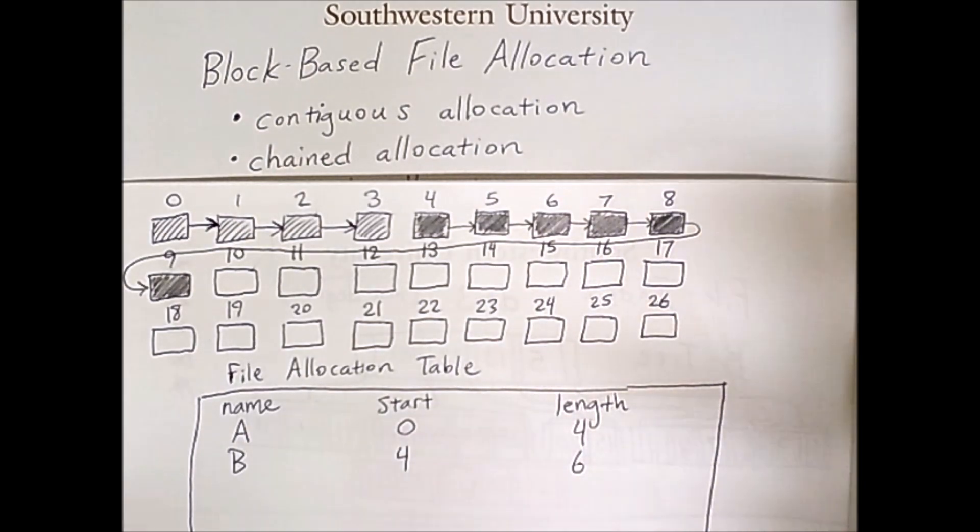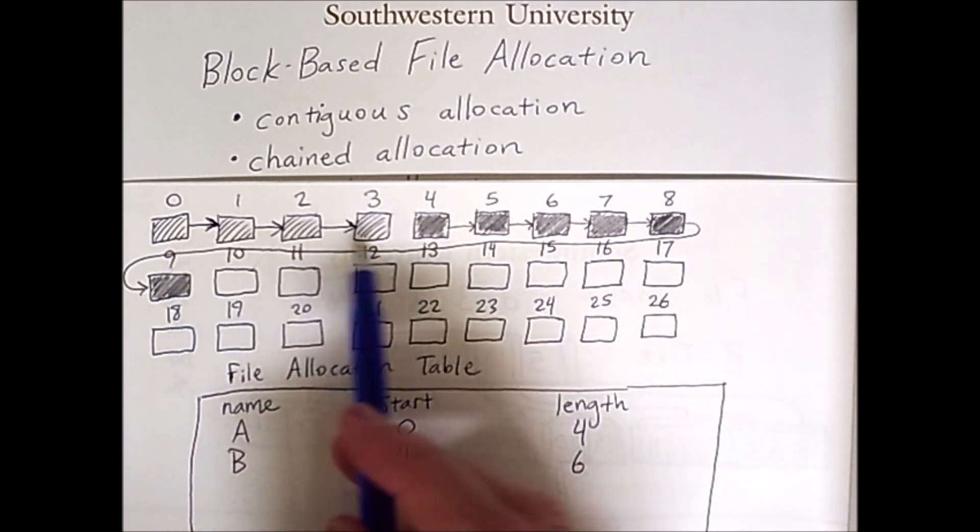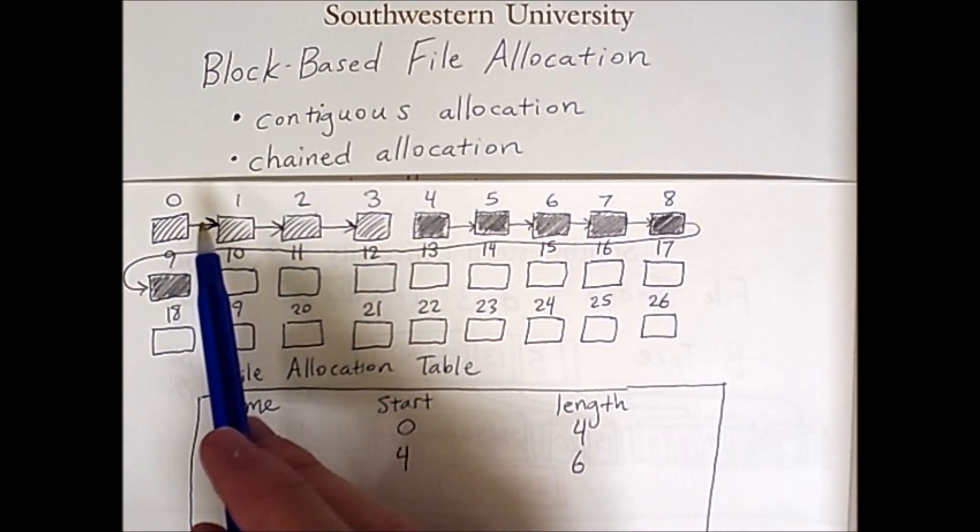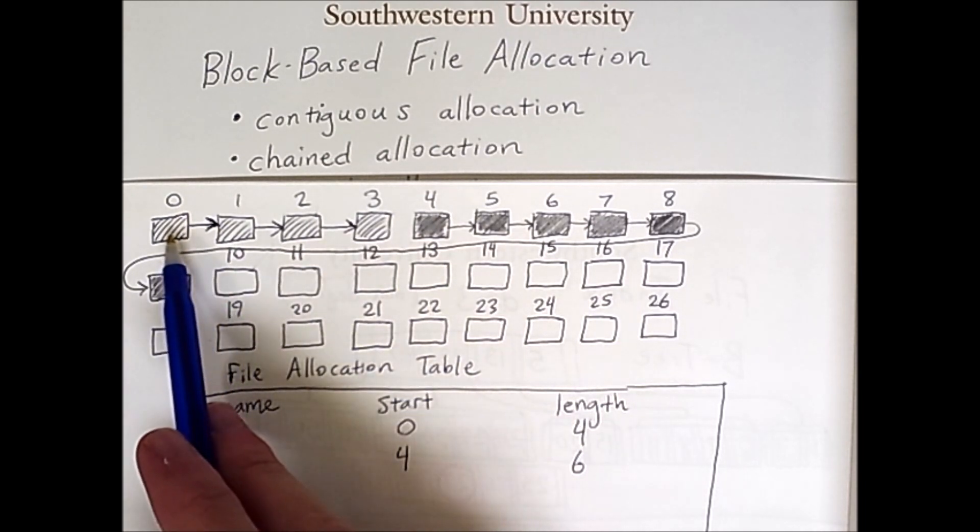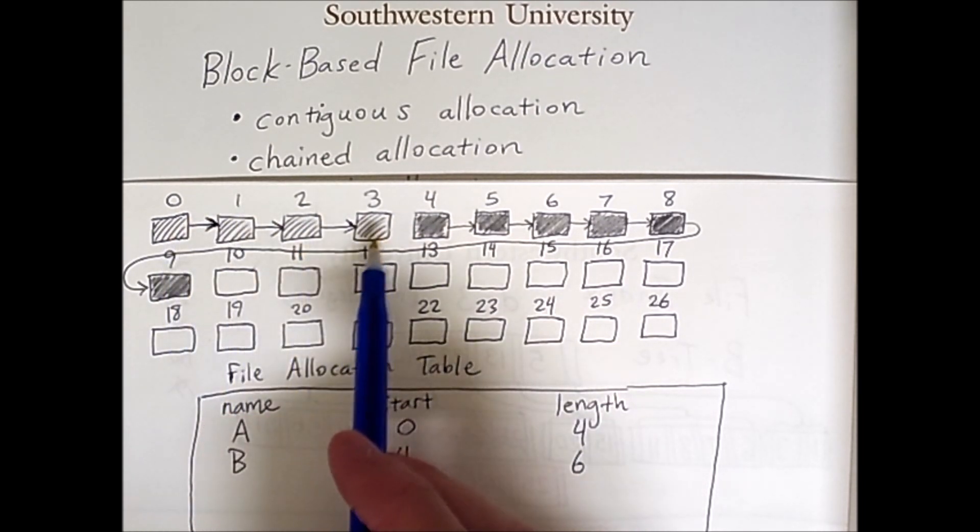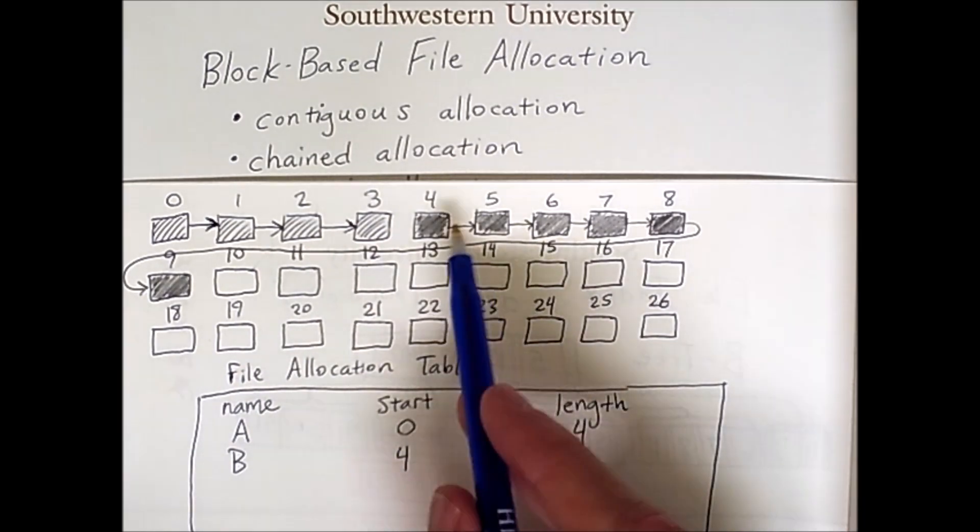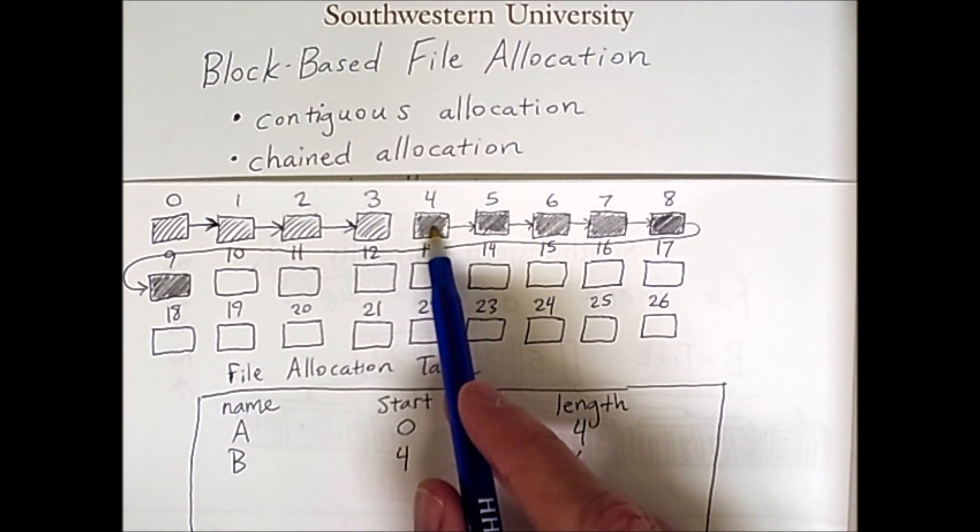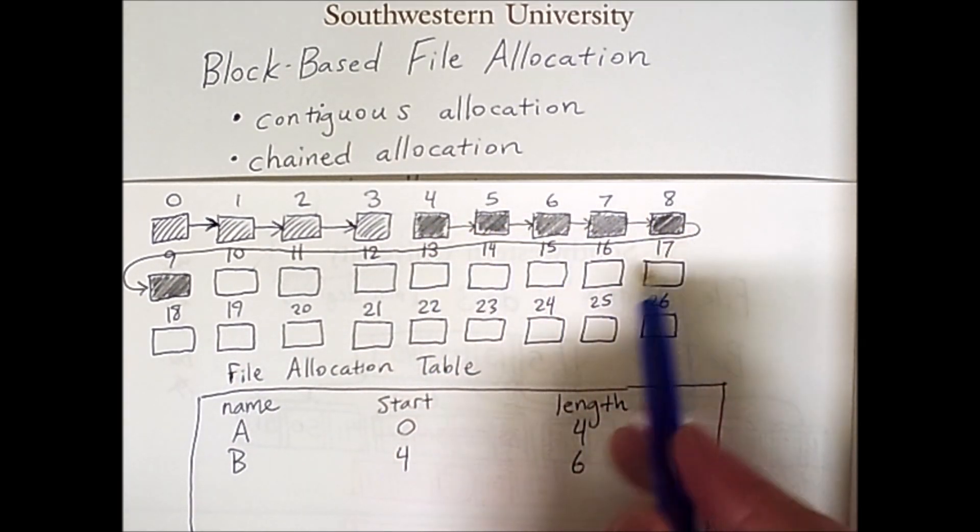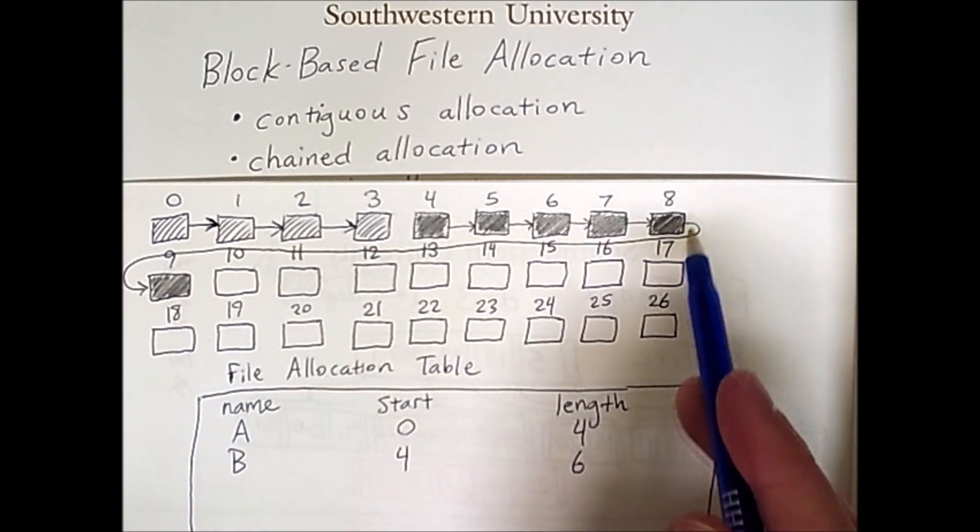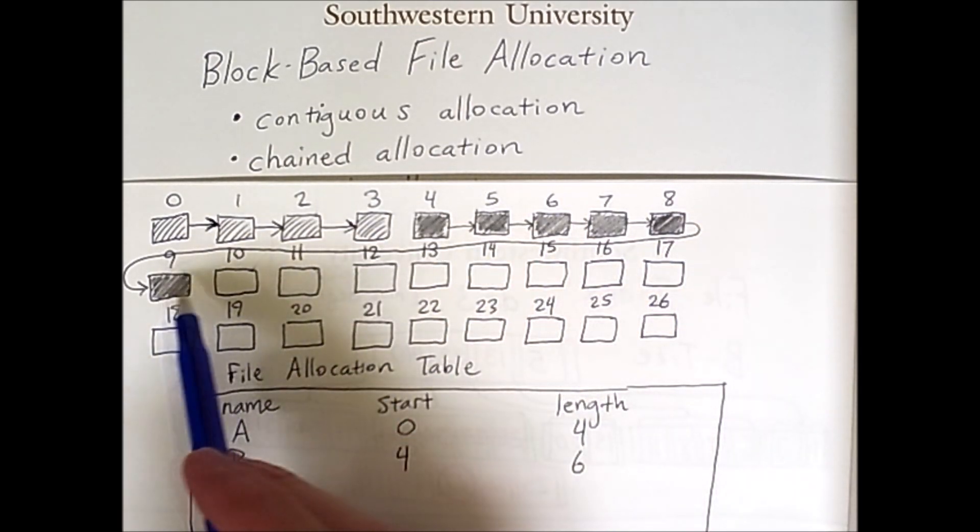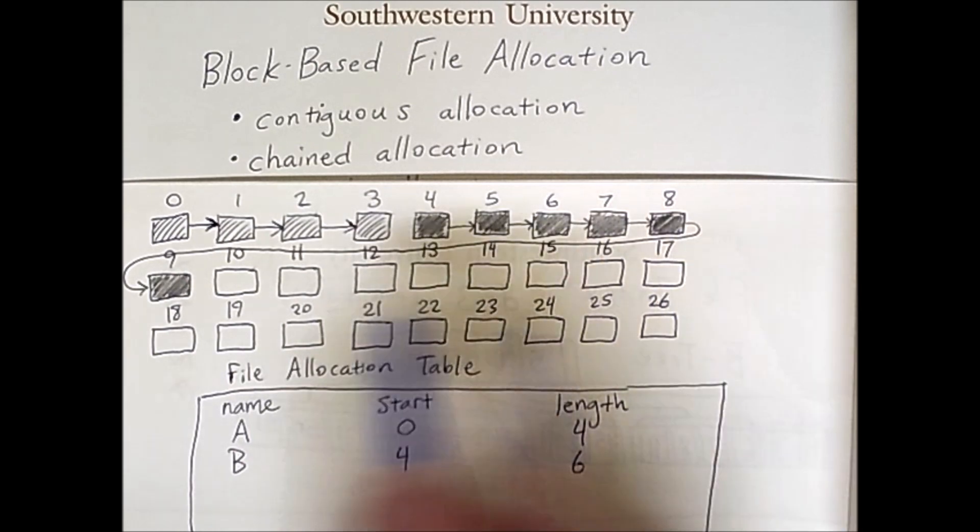You can see that after consolidation the two files are contiguous. We have file A starting at zero and going to one, then two, then three. And file B starts at four and goes from there to five, six, seven, eight, and then nine. Keeping in mind of course that nine is directly next to eight despite the way this is drawn.